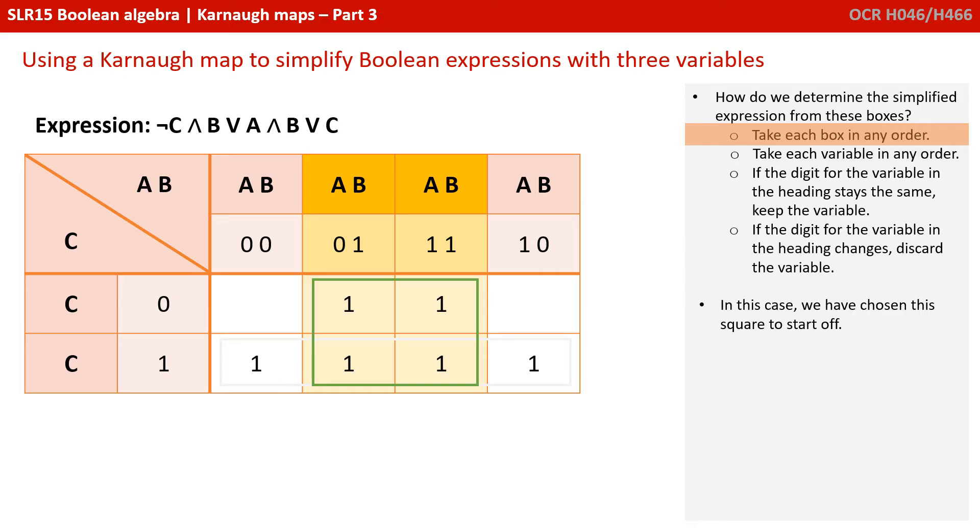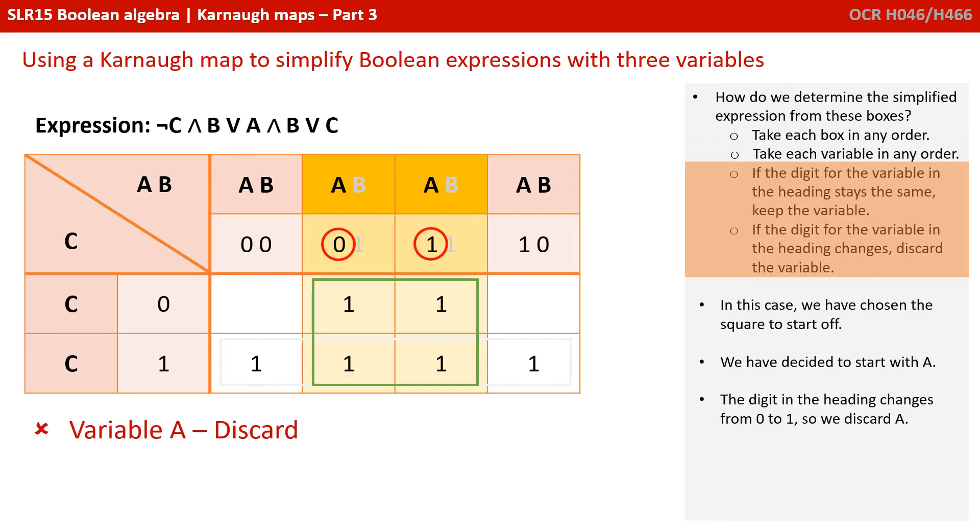So, we're going to start by taking each box in any order. So, we're going to take the square box of 4 1s. Take each variable in any order. So, we've decided to start with A. Now, if the digit for the variable in the heading stays the same, keep the variable. If the digit for the variable in the heading changes, discard the variable. We're looking here at the 0s and 1s written in the heading line, not in the main body of the Karnaugh map. You can see here, we've circled them in red, the digit for A is changing. It's a 0 in the left column, and it's a 1 in the right column. Because it's changing, we discard A. So, I've written that down. Variable A, discard.